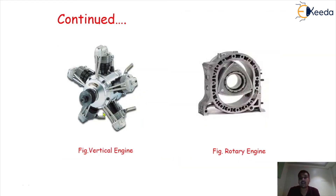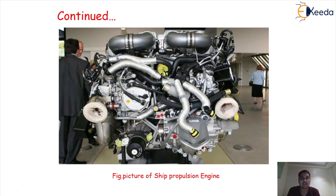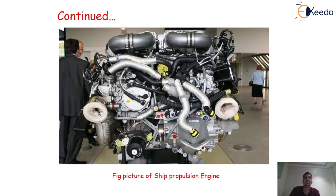Again, vertical engines with this cylinder arrangement are also there. This is a rotary engine; later on, we will talk in detail about this one also. These are pictures of a few very big engines for ship propulsion — such big engines for the generation of a huge amount of power in marine applications where maximum power is required.